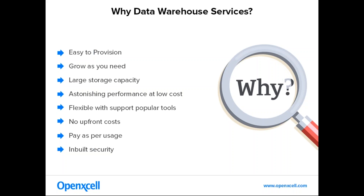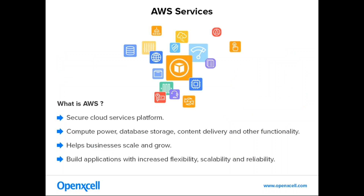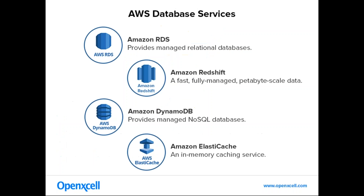But before moving to Amazon Redshift, let's discuss what is AWS. AWS is a secure cloud services platform. It offers services like database storage, analytics, monitoring, content delivery, compute power and other functionalities to build applications which are flexible, scalable and reliable. It will help businesses to easily scale and grow, and everything will be hosted on the AWS platform itself. AWS has a wide range of database services and can easily match your application requirements.